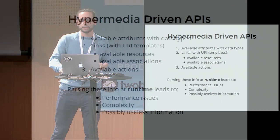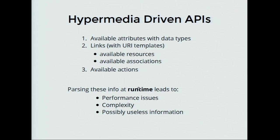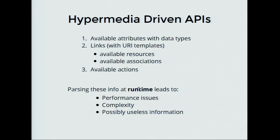So if we want to be perfect in terms of hypermedia, we need to tell the client — at runtime, according to REST — what the available attributes are and their data types. JSON has some data types, but we need stricter ones. We also need to tell the client about related resources through links, and how to update a resource via a POST request with the required attributes.